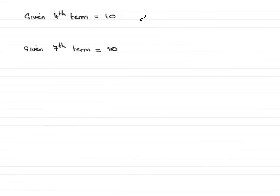In this question we're given a geometric series which has a fourth term of 10 and a seventh term of 80, and asked to find the common ratio.